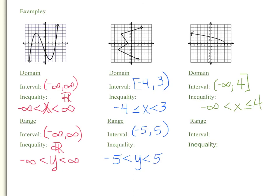Now let's identify the range of the third graph. The range begins with a y value of 0 and goes upward towards infinity. In interval notation: from 0 to positive infinity, inclusive of 0. In inequality notation: y is greater than or equal to 0, but less than positive infinity.